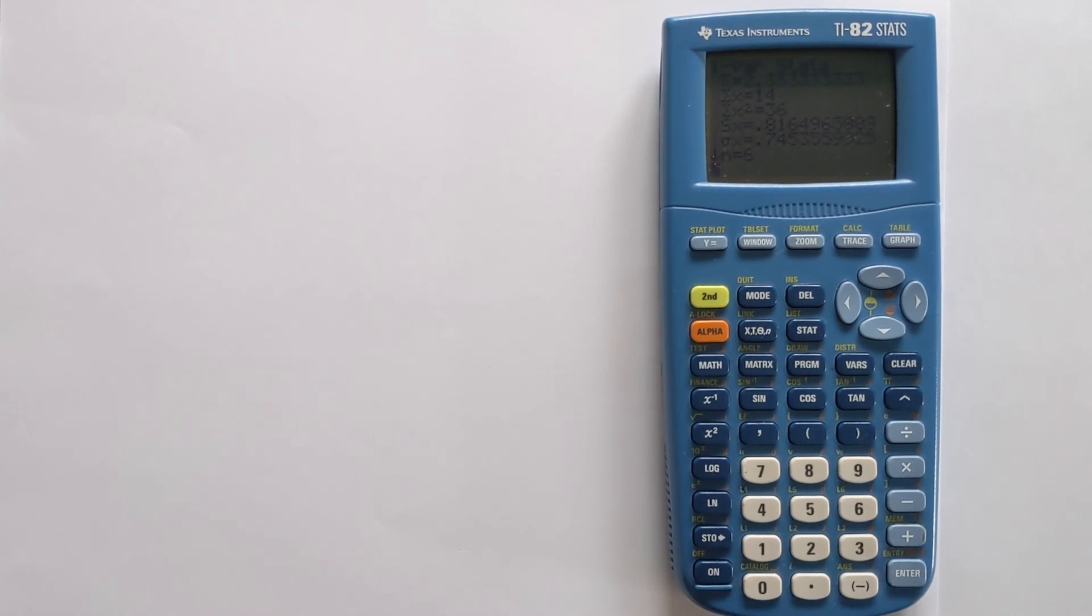But this time, we have our six data points that is taking into account the frequency column that we've now inputted. So this is how you do the calculation of mean and standard deviation with and without a frequency column on your TI-82 calculator.